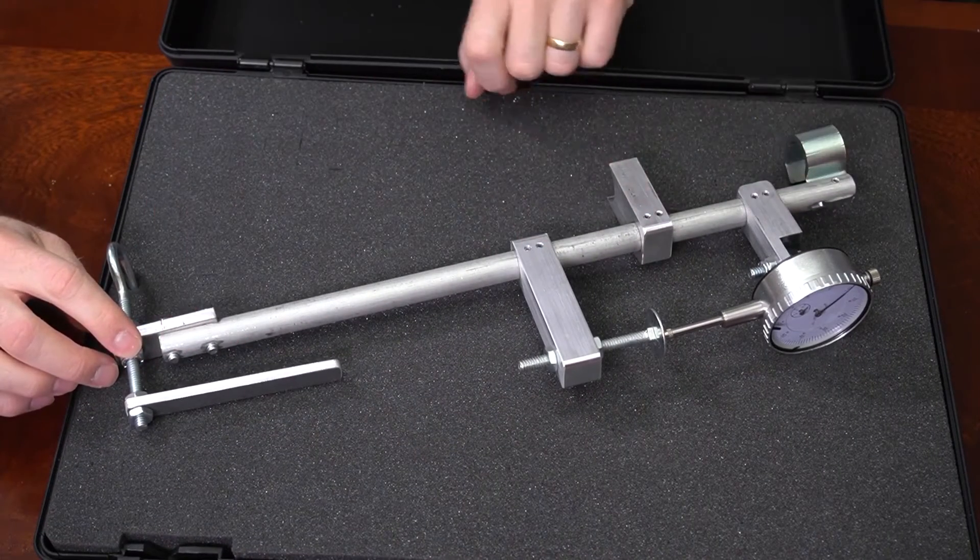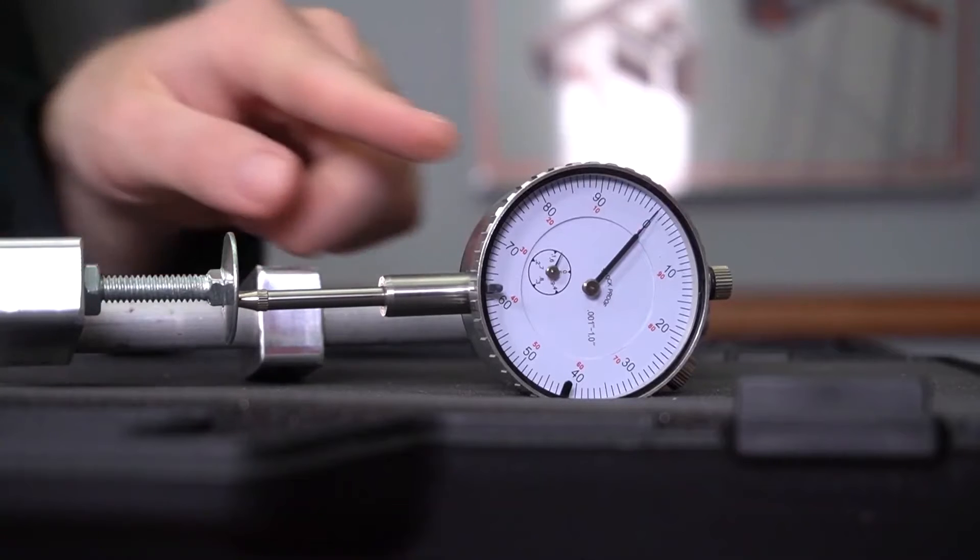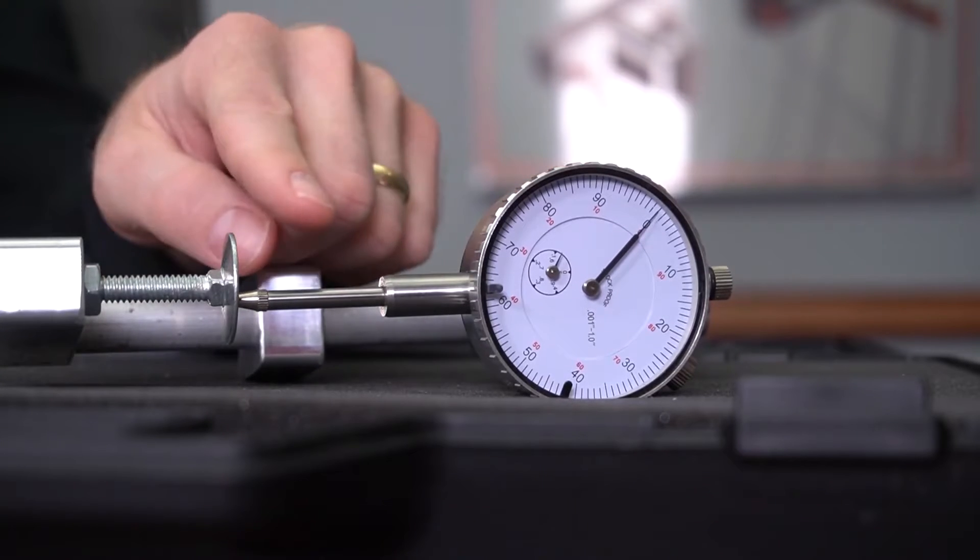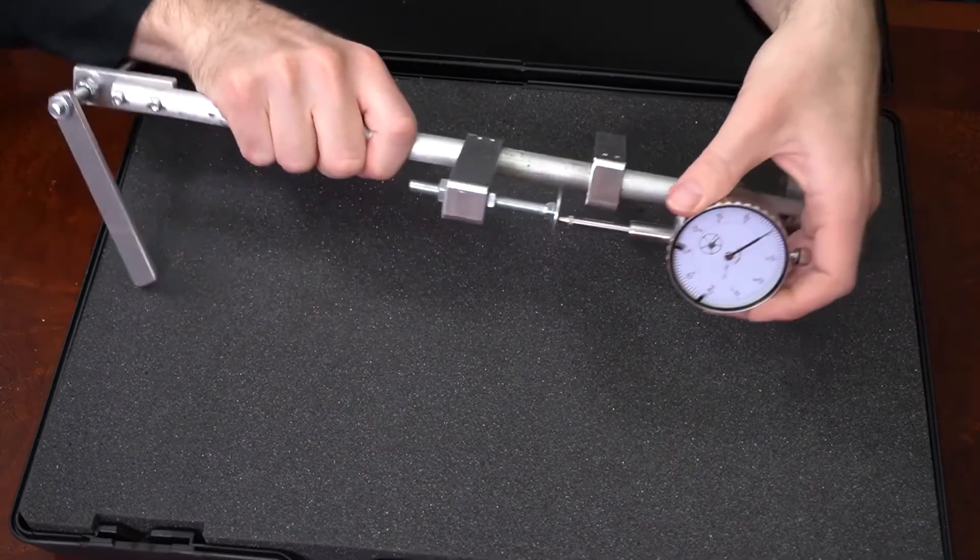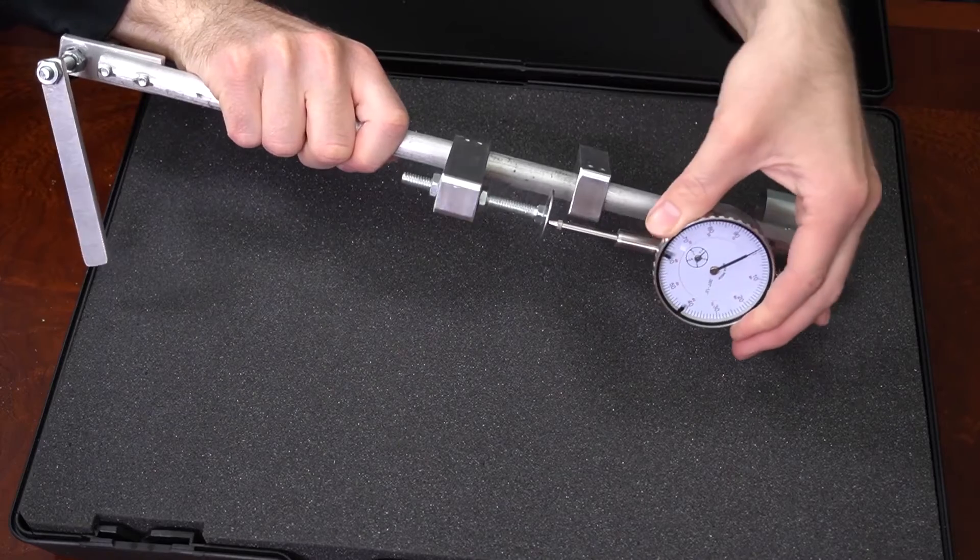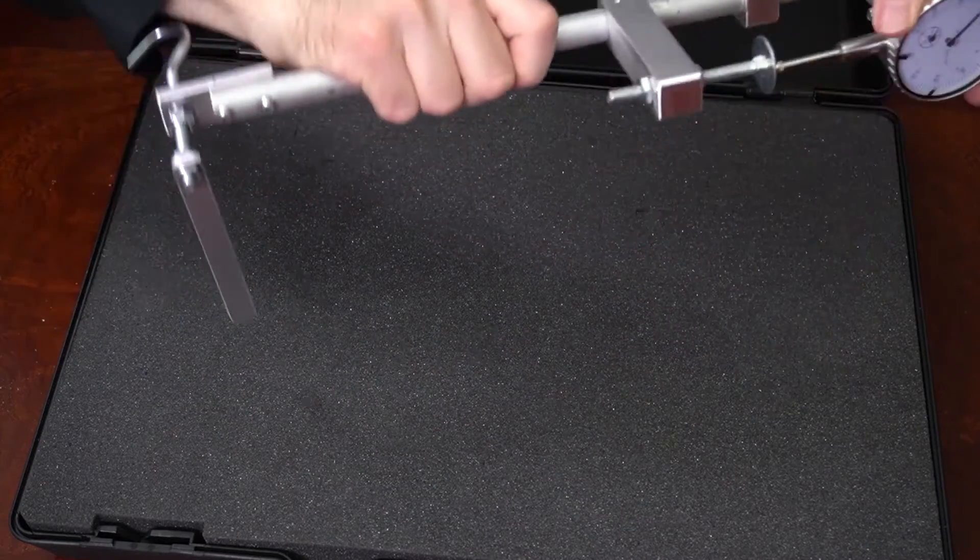It's got a rod in the center, an elevator bolt and a dial gauge and you'll want to make sure that the elevator bolt is making contact with the dial gauge. This will create a pre deflection in the gauge and you'll just want to adjust the face of the dial so that the needle aligns with zero.